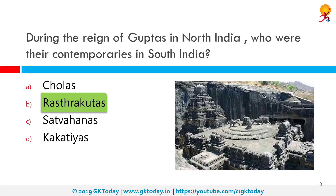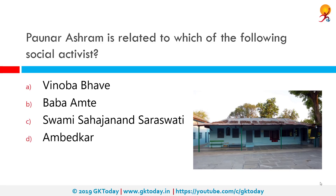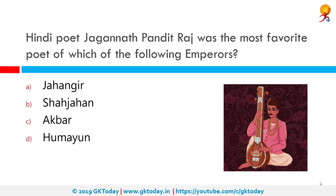Pona Rashtram is related to which of the following social activists? The correct answer is Vinobha Bhave. Pona Rashtram was founded by the great social reformer and activist Acharya Vinobha Bhave for the treatment of leprosy patients.